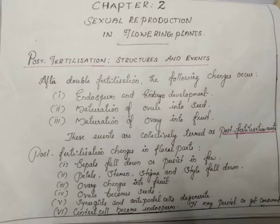Then ovary changes into fruit and ovule becomes seeds. The fifth change is that synergids and antipodal cells degenerate. Antipodal cells are present at the chalazal end; they are nutritive in function and provide nourishment to the embryo sac. Some substances produced by the antipodals help in the growth and development of endosperm. The last change is that the central cell becomes endosperm.